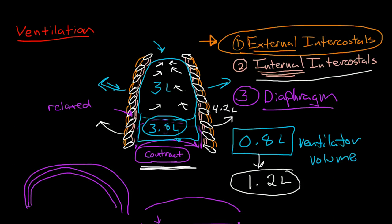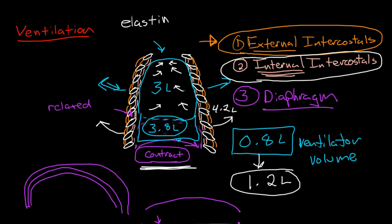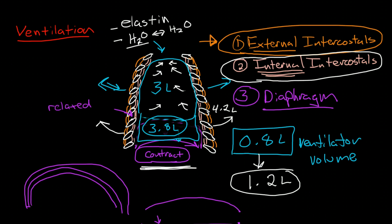The internal intercostals sort of do the opposite of what the external intercostals do, but they only do so during forced exhalation. During a relaxed exhalation, it is the passive forces from the elastic forces within the lung tissues themselves that are due to elastin. Actually, there's some forces that are caused by water molecules being attracted to each other, and this is a significant force as well. We'll talk about that a little more when we talk about surfactant in a later video.